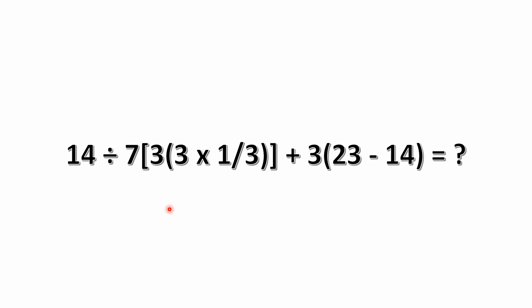What we have here is 14 divided by 7, and that's multiplied by 3 times, and then within brackets, 3 times 1 third, closed parentheses. And then we have plus 3 times 23 minus 14 in parentheses.